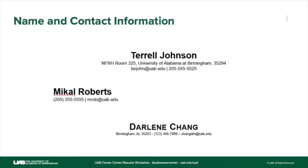In your name and contact information, you can have several different formats. There are basically three pieces of information you should have: your name, the telephone number you prefer to use that you will pick up if an employer calls, and a professional email address that you're going to pay attention to for potential employer messages. We have a couple of examples here. As you notice, Terrell Johnson's contact information actually includes his physical address, which is completely fine — it's completely optional.